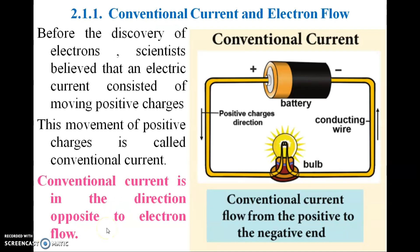Now we look at conventional current and electron flow. Before the discovery of electrons, scientists believed that electric current consists of moving positive charges. This movement of positive charges is called conventional current. Conventional current flows in the direction opposite to electron flow.